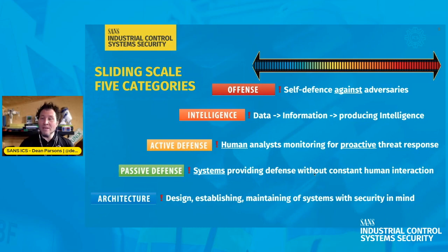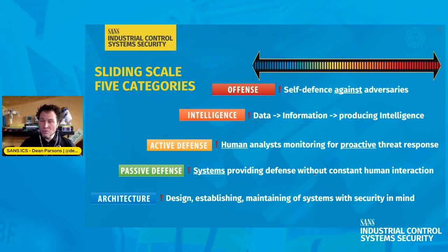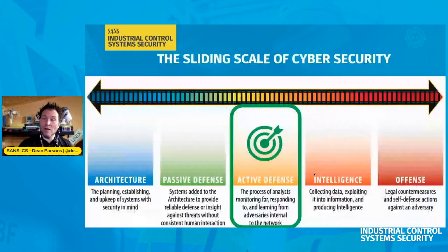Beyond that we have intelligence — the maturity area where you're collecting data, refining that data into information, giving it context, and producing threat intelligence. You can share that with the community or use it internally to your network. Beyond that, at the top in red, we have offense — a kind of self-defense against adversaries, which typically we see nation states perform, but not generally a lot of industrial control systems outside of that realm.